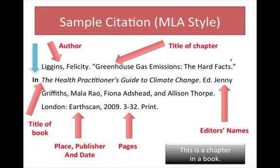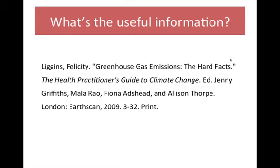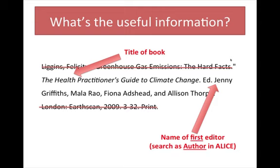So what's the information that you need in order to find the book itself? First of all, forget about the author's name or the title of the chapter. The publication info isn't useful at this point either. That leaves the title of the book and the names of the editors. It's usually simpler to search in Alice for the title of the book. If you search by an editor's name, editors are the same as authors as far as Alice is concerned. Choose the first one listed, as multiple editors aren't always searchable in Alice.